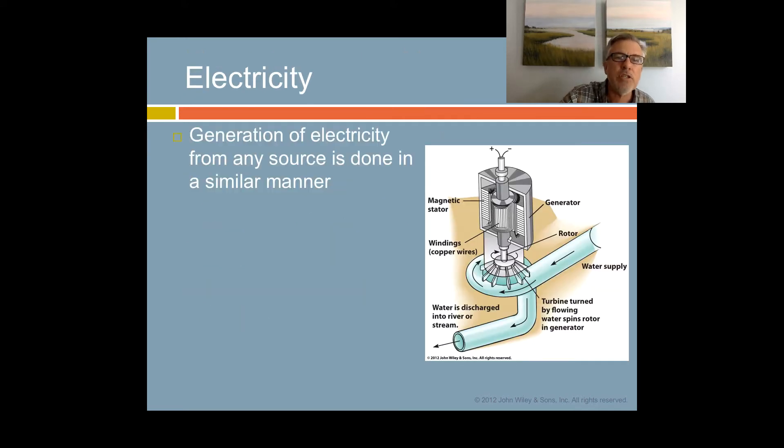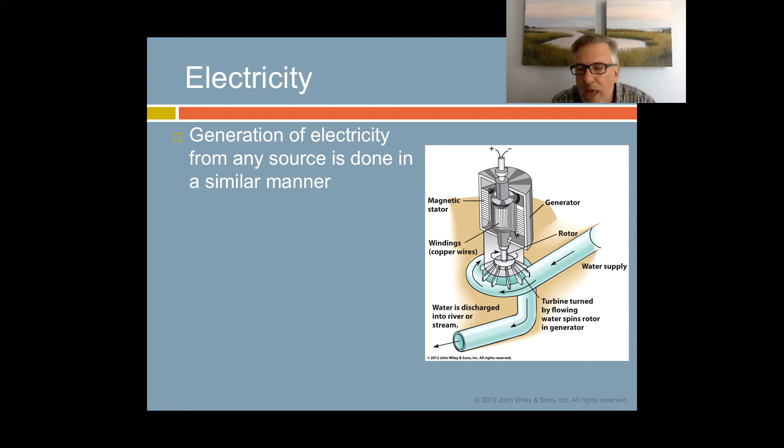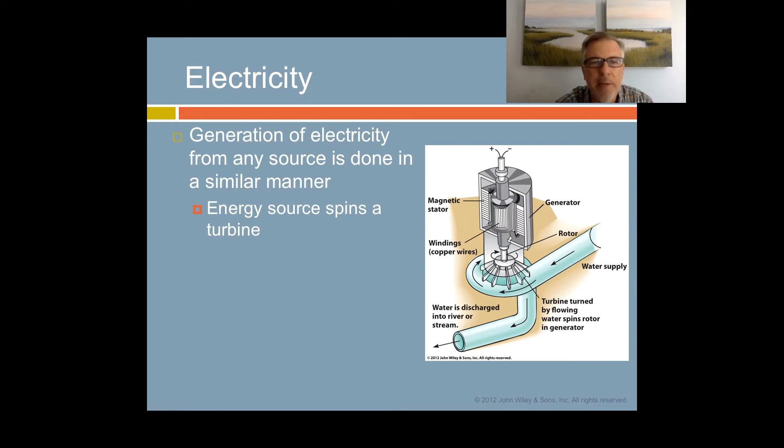So how do we make electricity? From virtually every energy source that we use to make electricity, it is done in a very similar manner. What you see here is a picture of a turbine. The turbine consists of a rotor, a magnet, and a set of wires. The energy source spins the turbine, and the turbine turns what's called the generator.